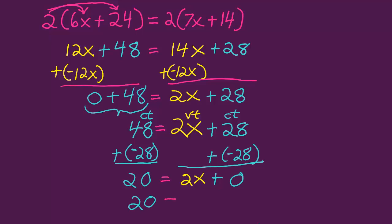So 20 equals 2x is what I have. A constant term on the left, a variable term on the right. One constant term, one variable term.